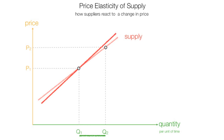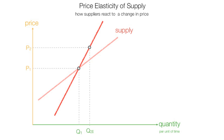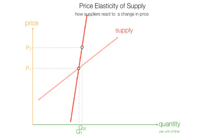Now I am going to make supply slightly more inelastic. At the exact same price P2, there is less quantity supplied, which I label as Q2I for inelastic. When I compare these two quantities supplied, it is obvious that the more inelastic has less quantity supplied. If I continue to make that supply curve more inelastic — almost straight up and down — the increase in quantity supplied due to the increase in price becomes smaller and smaller.